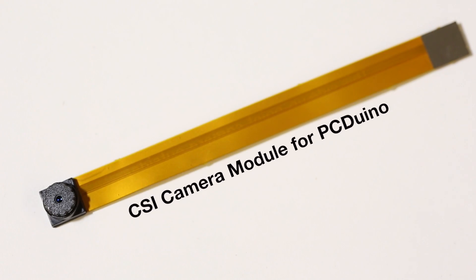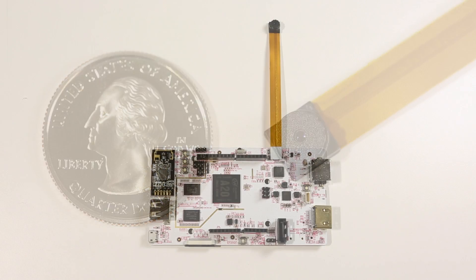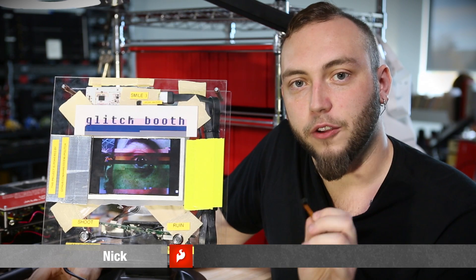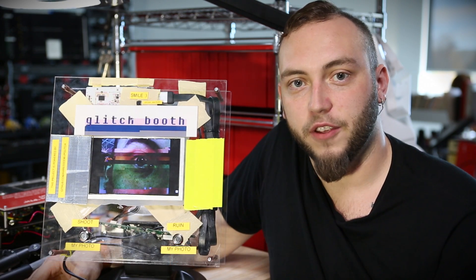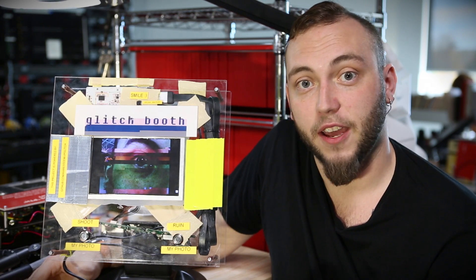This is the CSI camera module for the PC Duino version 3. It's a simple 2 megapixel camera that connects directly to the PC Duino. The latest release of Ubuntu for the PC Duino already has all of the drivers installed to support this hardware, so you just plug it in, boot it up, and then start a program like GUVC view and you can pull the output from that camera to take pictures or even to take video.